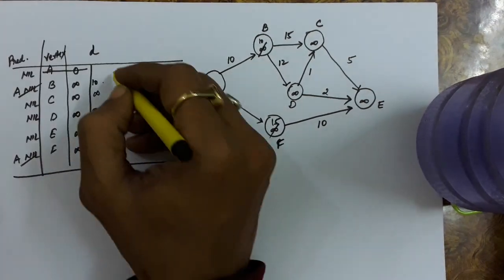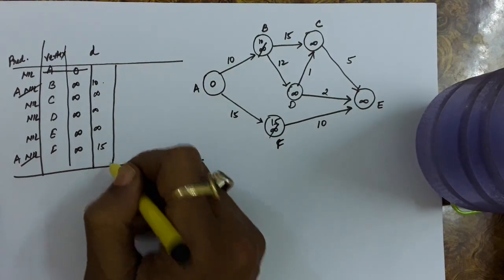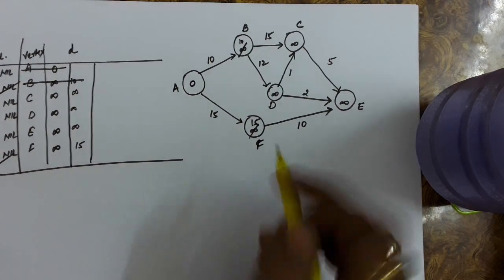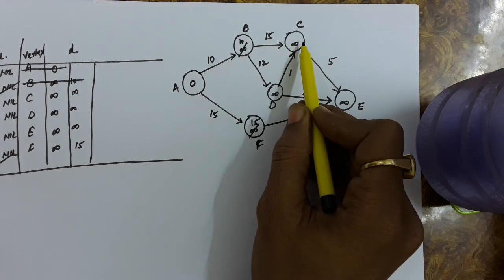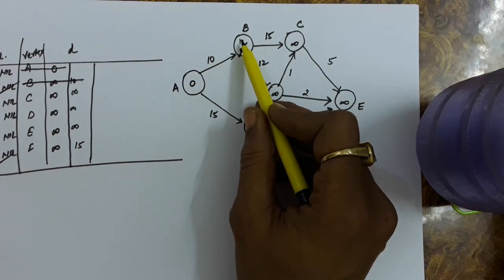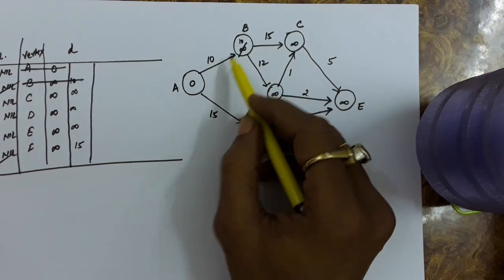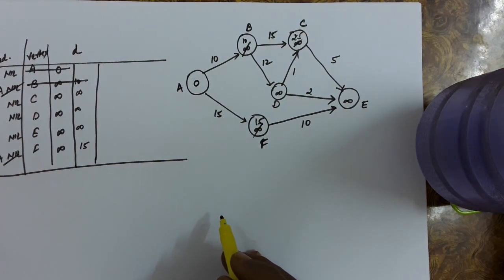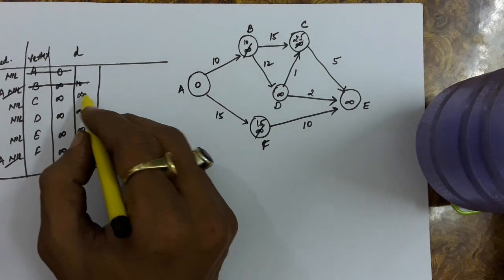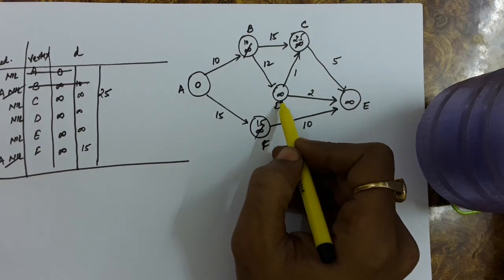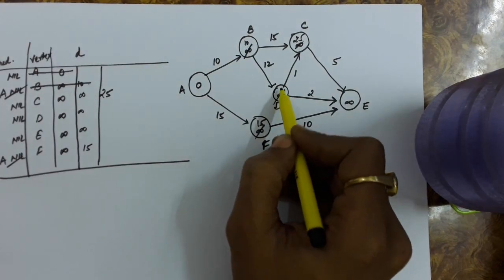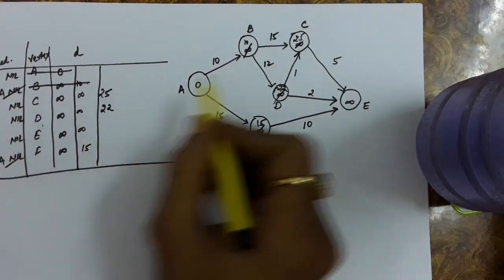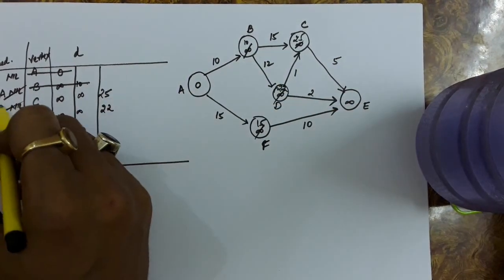Out of the available distances, 10 is the minimum. So we delete vertex B and see the connections from B. B to C is 15. Distance of B from source is 10, so distance of C from source will be 10 plus 15 = 25. 25 is less than C's earlier distance (infinite), so we update this distance as 25. For D, it will be 10 plus 12 = 22. Since C and D have both been explored from B, their predecessors will be B.